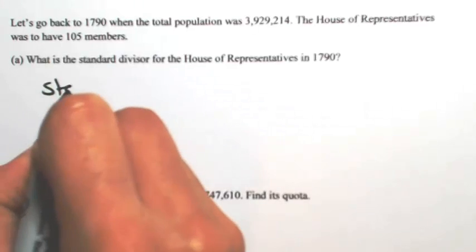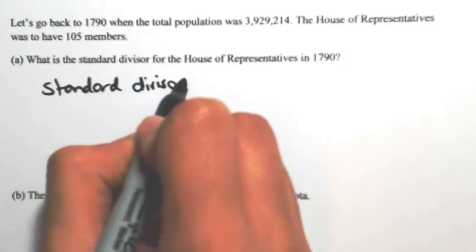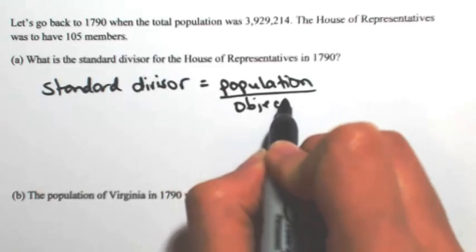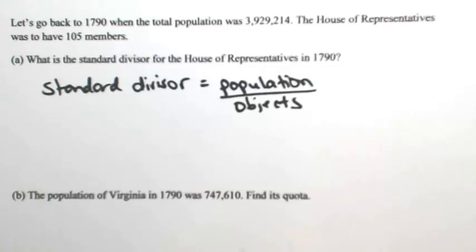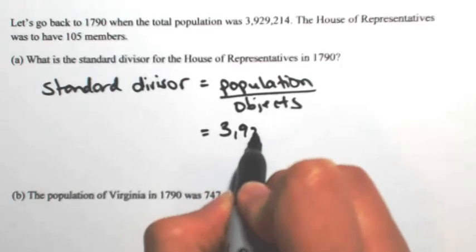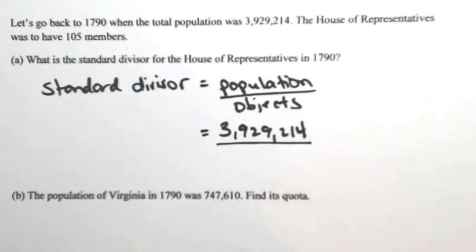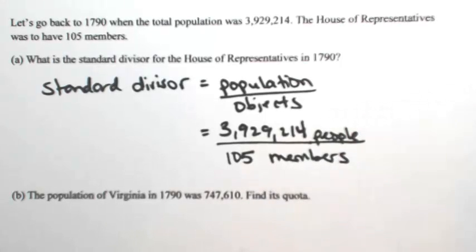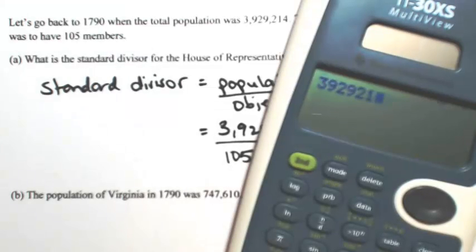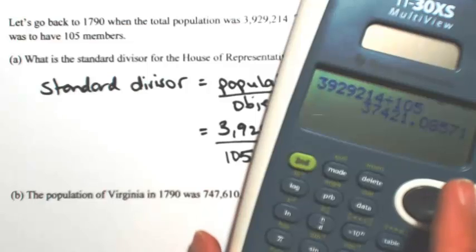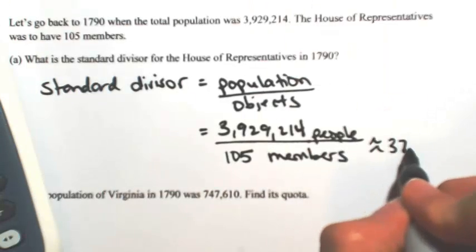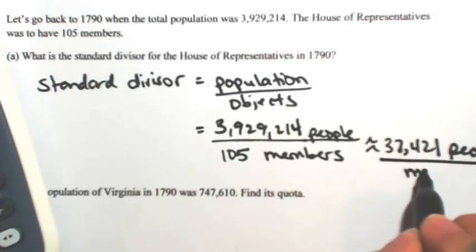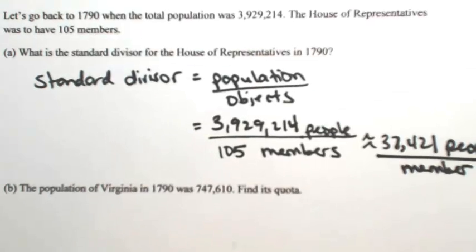The standard divisor is a ratio of the population to the objects — in this case, the members in the House of Representatives. The population at the time was 3,929,214, divided by the total number of members, which was 105. So we have people to members. Dividing that, we get about 37,421. So about 37,421 people would be represented per member.